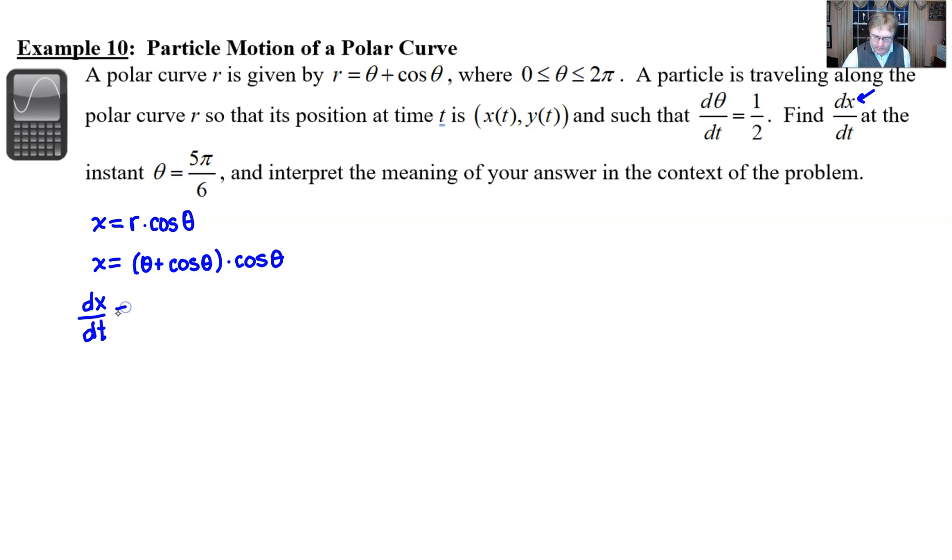In other words, any time that you come across a variable that's not a t, which is every time, you're going to tack on d, in this case, theta over dt. To top it off, you're going to use the product rule, aren't you? Because we have a product here.